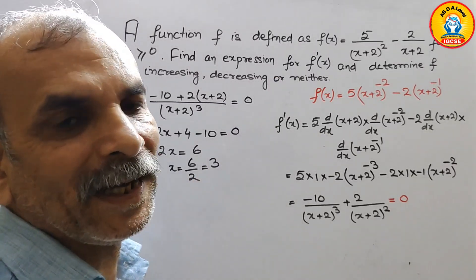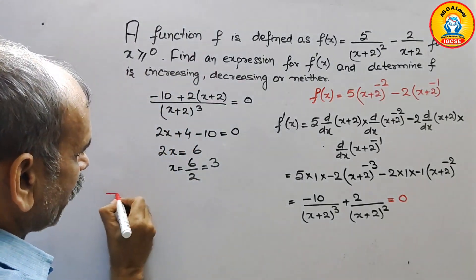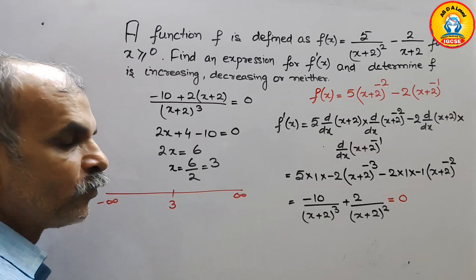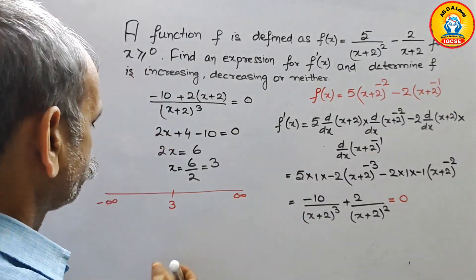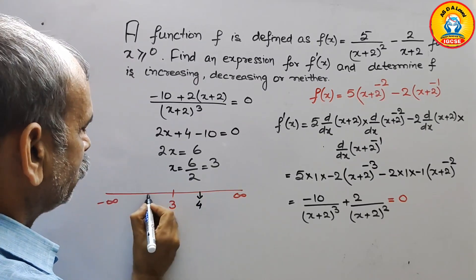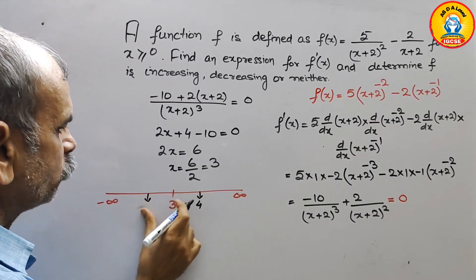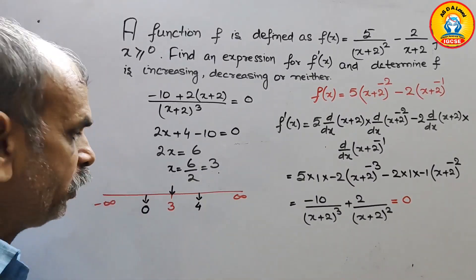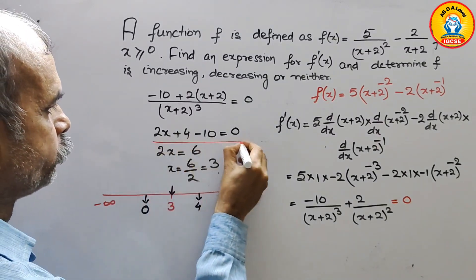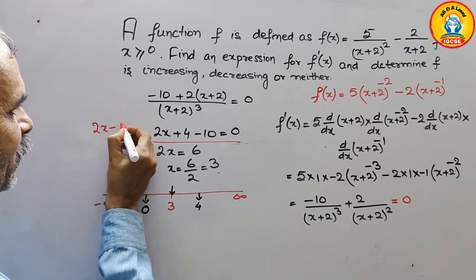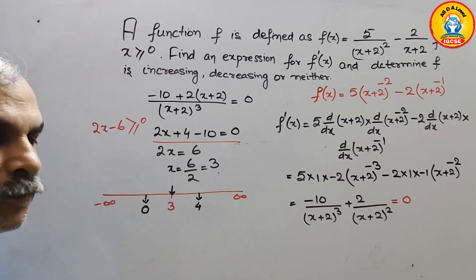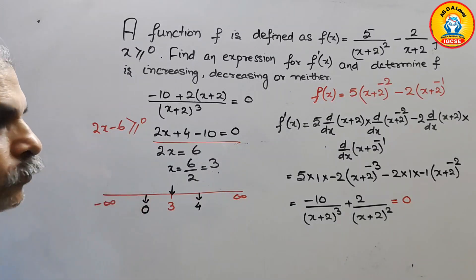Now we will draw our number line. The critical value is 3, with infinity on one side and minus infinity on the other. We take two test points: x = 4 on the right and x = 0 on the left. We substitute these values into 2x minus 6. First substitute x = 0.